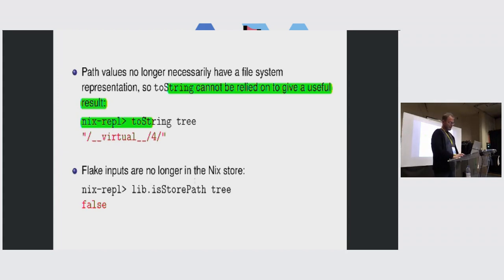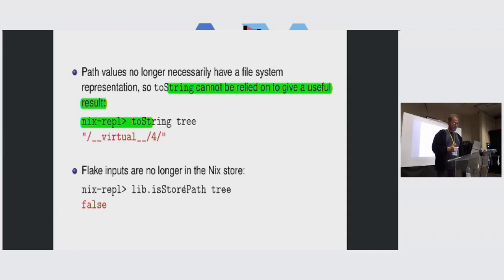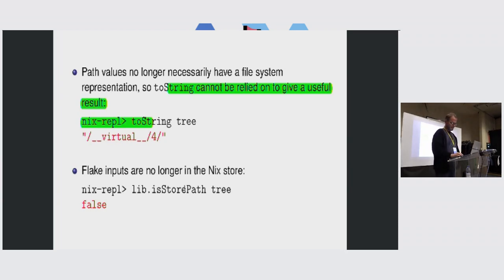There is also a breaking change that occurs kind of frequently: since flake inputs are no longer in the Nix store, lib.isStorePath will return false, whereas previously it returned true. Even though it can be coerced into something that is in the Nix store, if you're doing this as a type check — as certain types in the NixOS module system do — it might break.